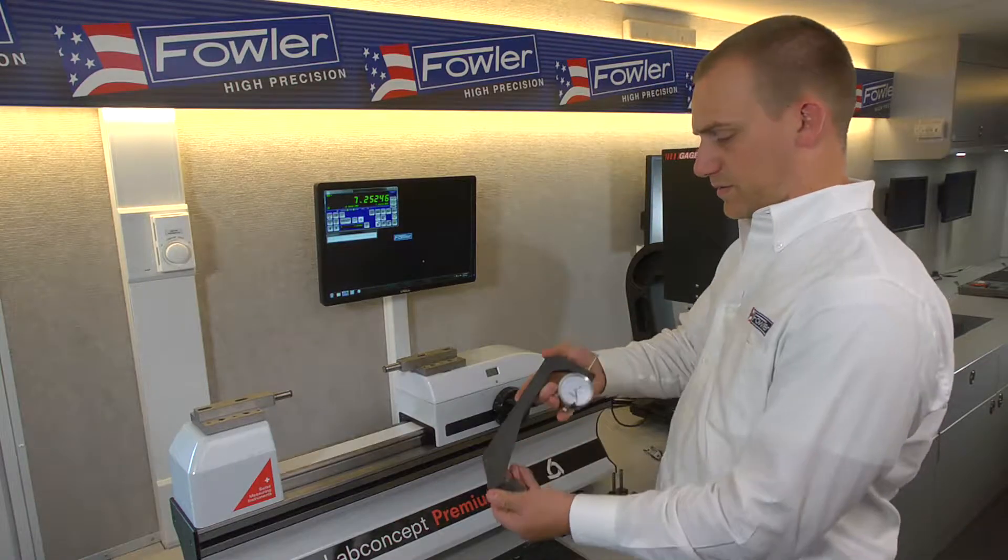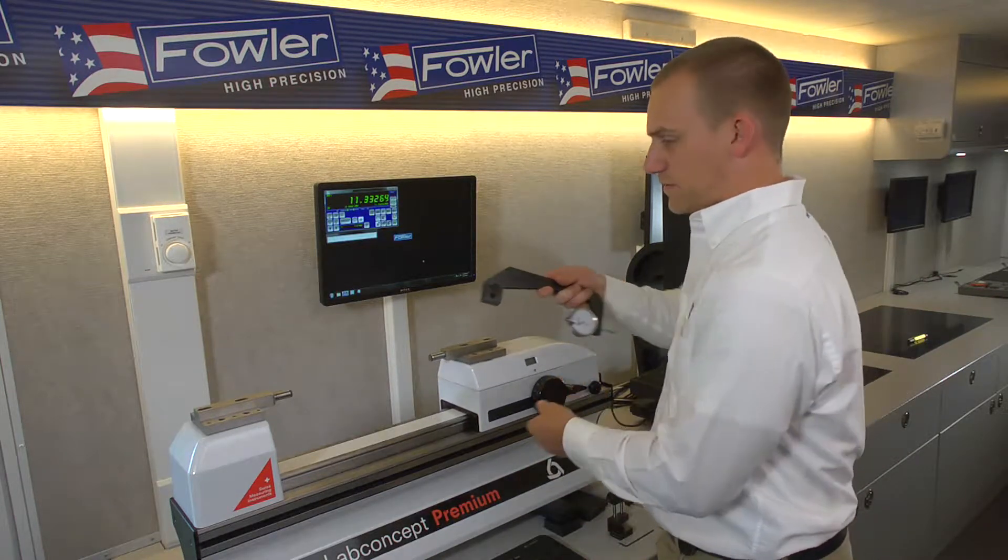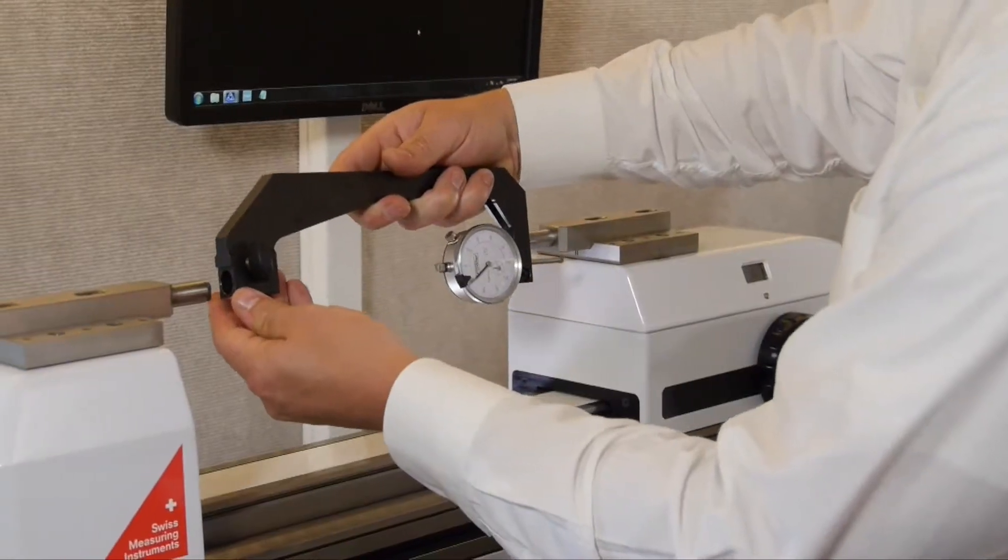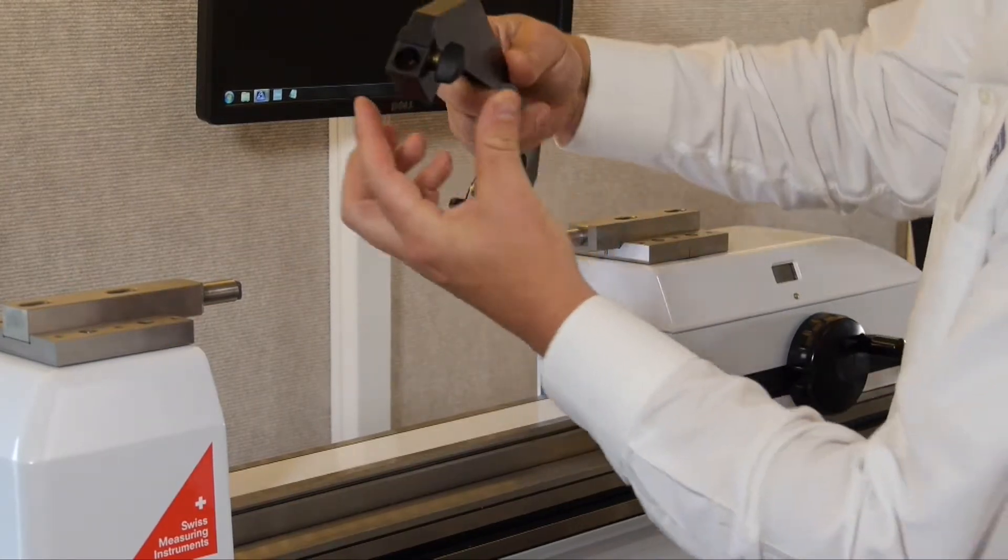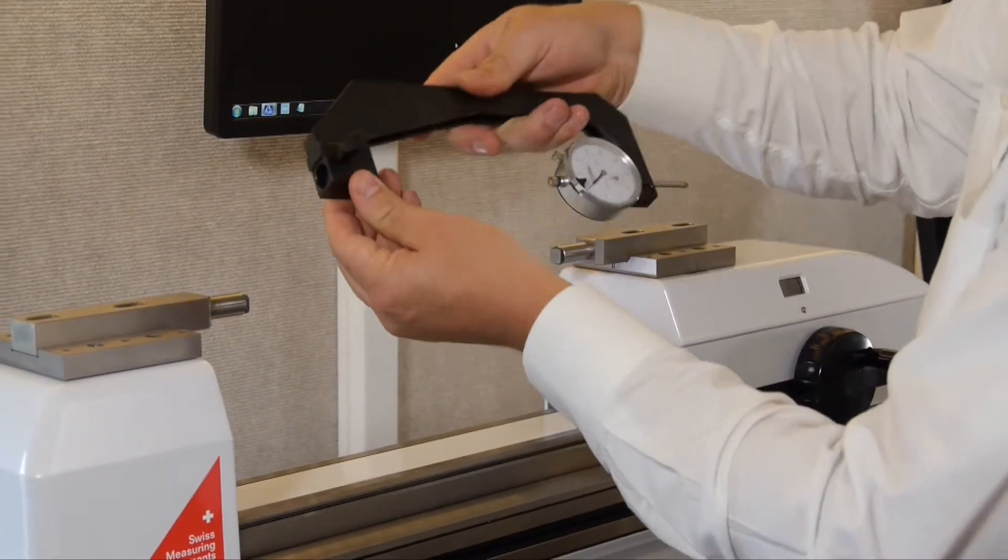For measuring dial indicators we have this very simple device which just slides over top of the standard anvil. You can see it's got a bore, a clamp, and then there is a step right here for locating the device vertically.